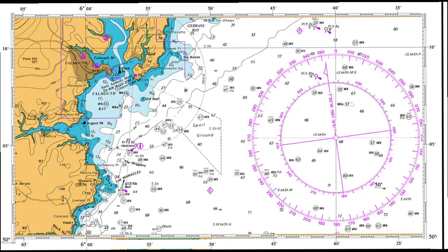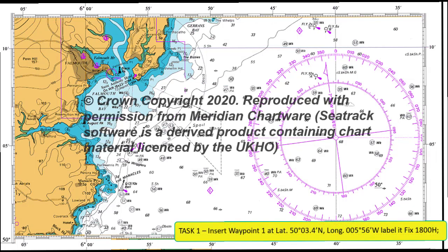Welcome to this Module 2 Mixed Task Activities. The first task is to insert waypoint 1 at latitude 50 degrees 03.4 minutes north, and longitude 005 degrees 56 minutes west at 1800 hours.